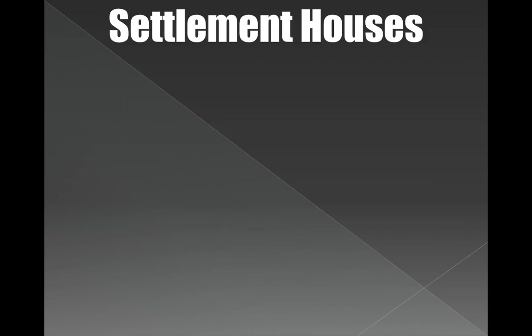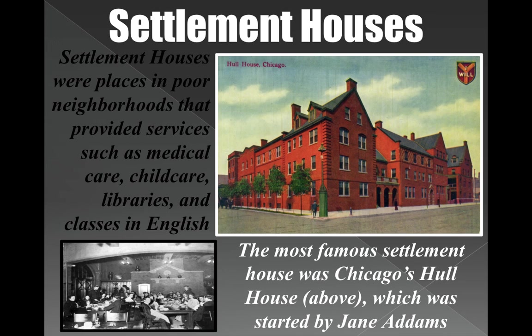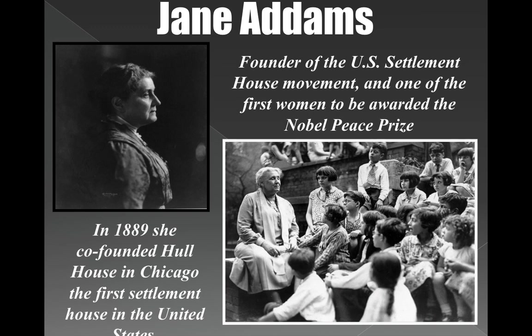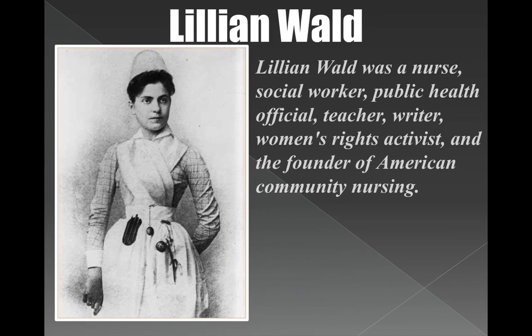The government helped establish settlement houses — places where poor people could go for medical care, childcare, libraries, and English classes for immigrants. The most famous one is Hull House, formed in Chicago by Jane Addams, the founder of the settlement movement and one of the first women to be awarded the Nobel Peace Prize. She founded it in 1889. Another important woman was Lillian Wald — a nurse, social worker, public health official, teacher, writer, and women's rights activist who founded the American Community Nursing Program, also helping immigrants coming into cities.